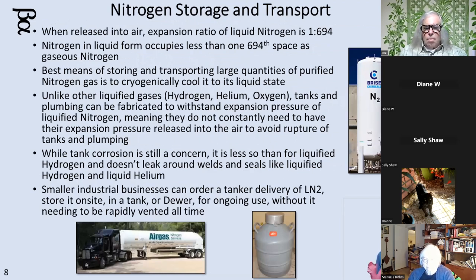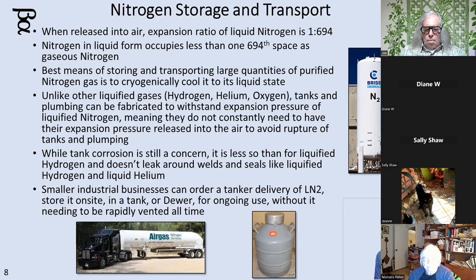When you release liquid nitrogen into air and it expands from the heat, it expands at a ratio of 1 to 694, which is considerable — but it's less than oxygen, helium, and hydrogen. So it's a manageable expansion, and you can actually make tanks that will keep its pressure and keep its cool without having to constantly vent, unlike oxygen and hydrogen. Because if you didn't vent liquid hydrogen and liquid oxygen, the tank would rupture. You can conveniently store nitrogen in liquid form at industrial plants and on tank trucks. There's a company right here in Fort Lauderdale called Air Gas — if you need a lot of liquid nitrogen, give them a call.